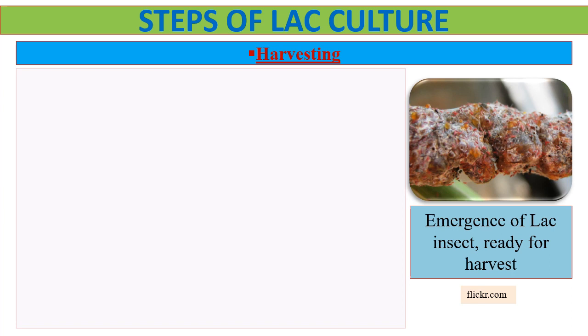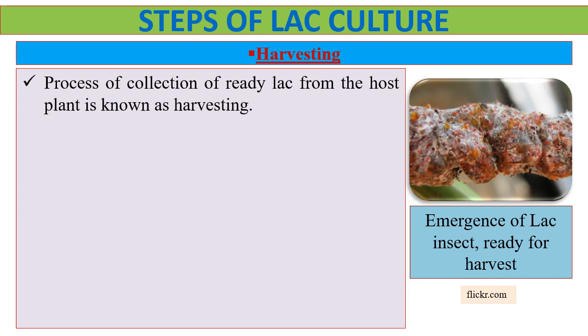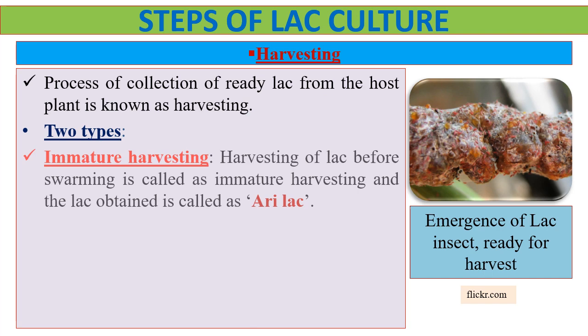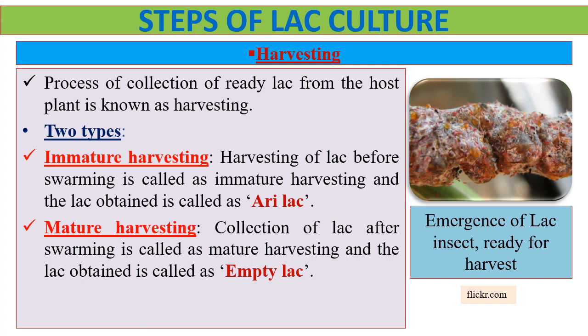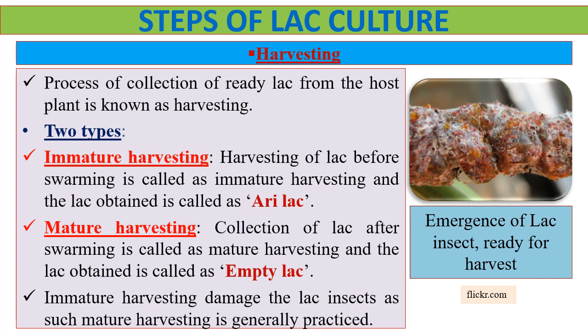Next comes harvesting, which is the process of collection of ready lac from the host plant. Two types of harvesting can be practiced. One is immature harvesting, where the lac is harvested before swarming and the lac obtained is called airy lac. The other is mature harvesting, where the collection is done after swarming and the lac obtained is called empty lac. Mature harvesting is generally practiced, since immature harvesting may damage the lac insects. In the picture, we can see the emergence of lac insects, indicating the lac is ready to harvest.